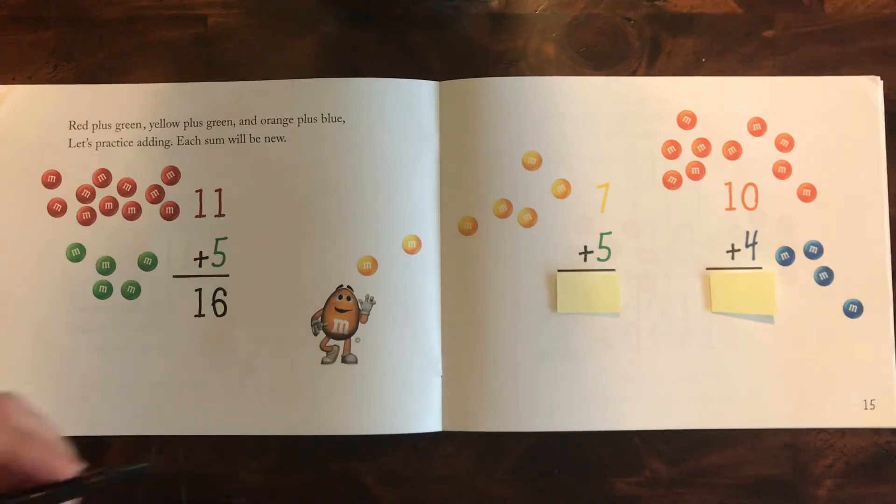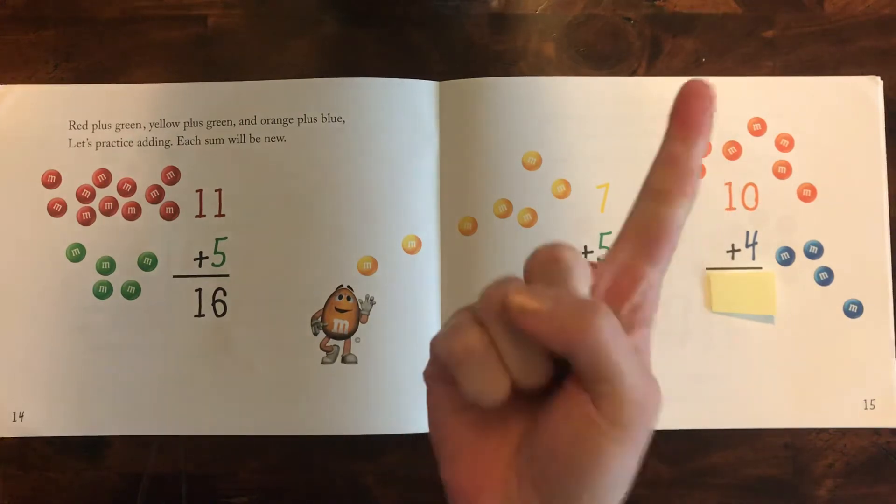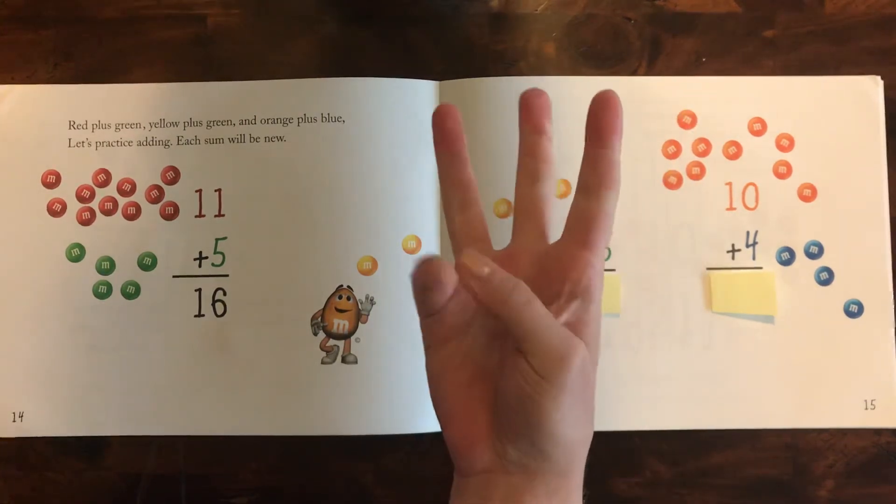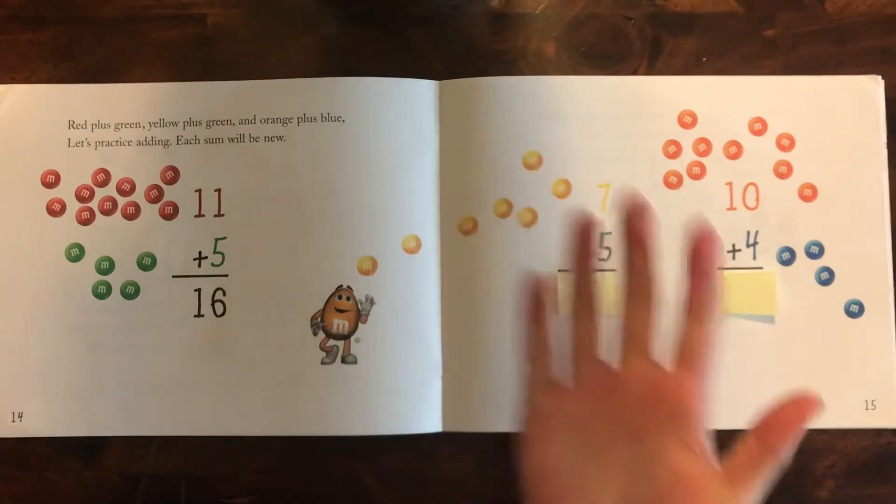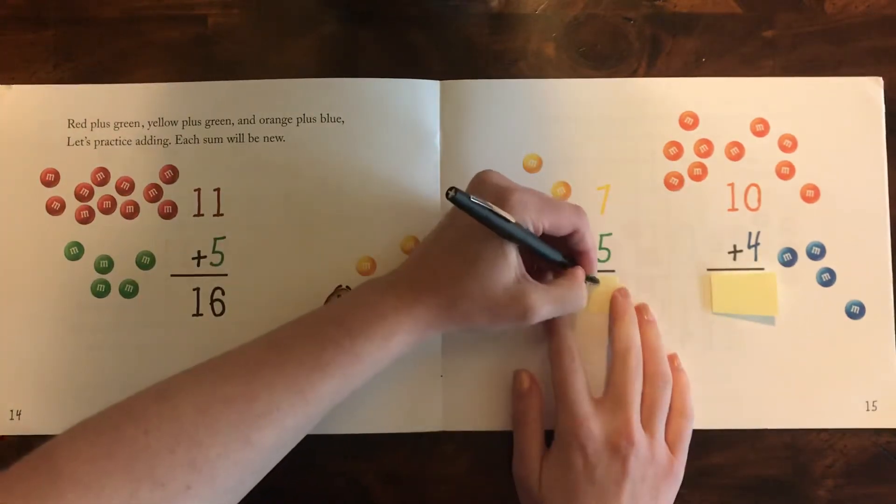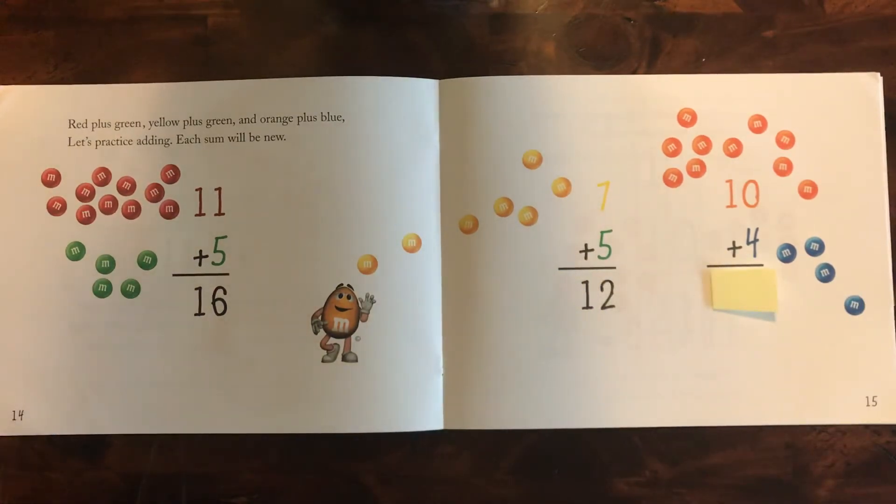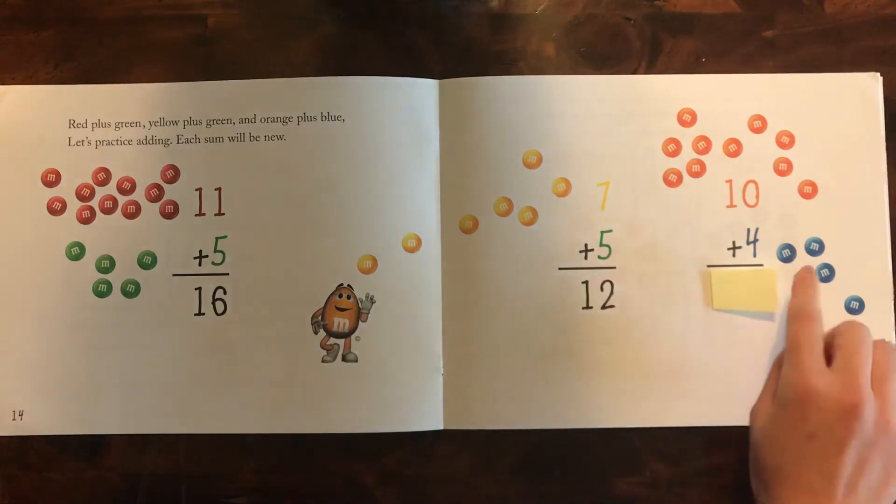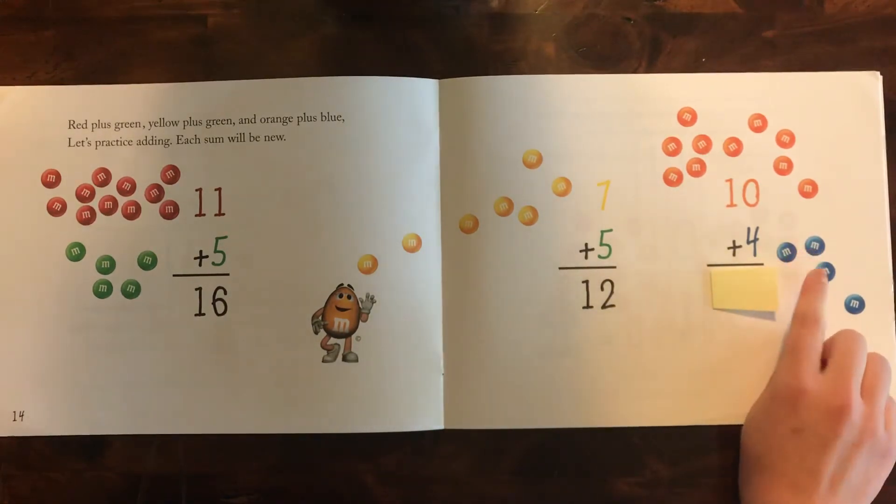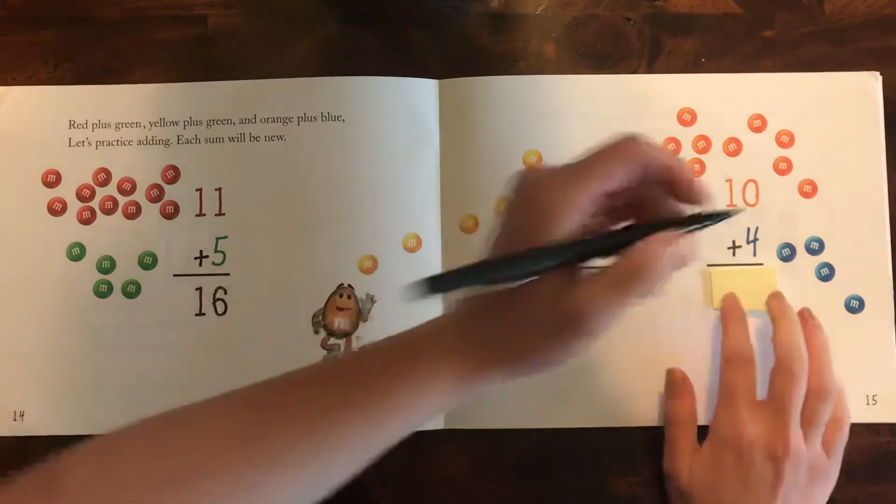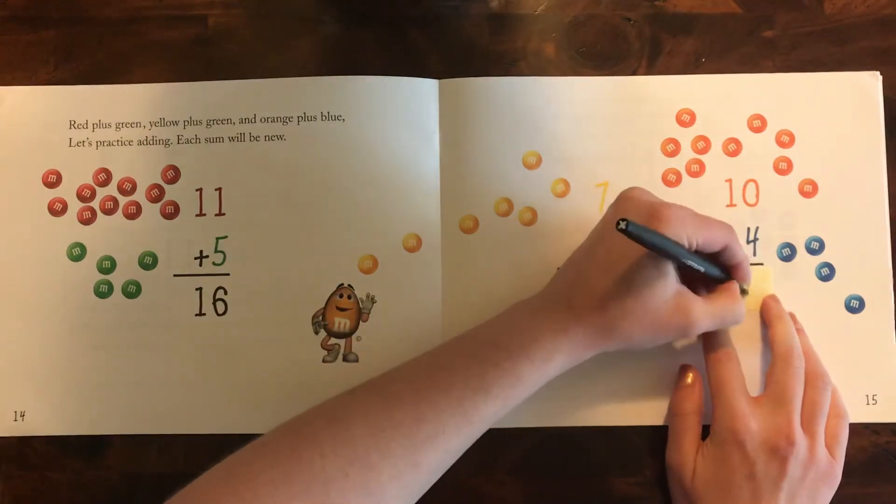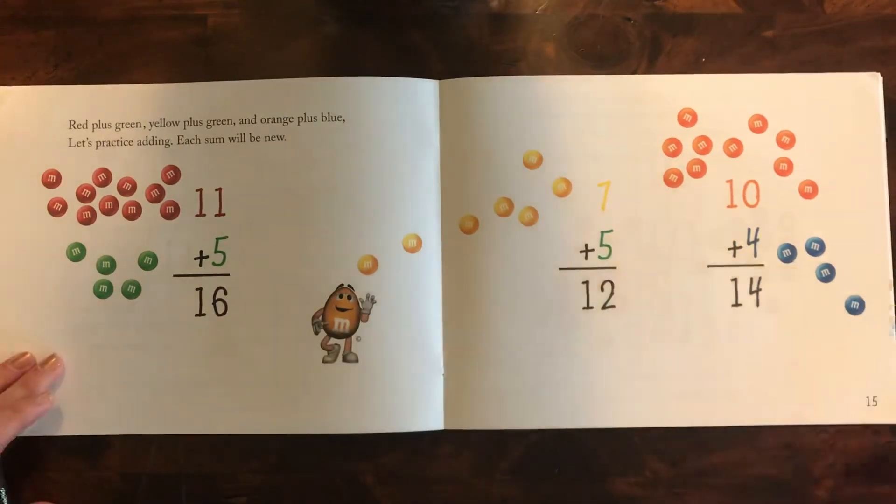Now you can try these ones. We have 7 plus 5 more. So let's start at 7 and we'll count on: 7, 8, 9, 10, 11, 12. Let's see, did we get the right answer? Yep. And then 10 plus 4 more. So let's start at 10, count 4 blue. Ready? 10, 11, 12, 13, 14. Let's see if we got the right answer. We did.